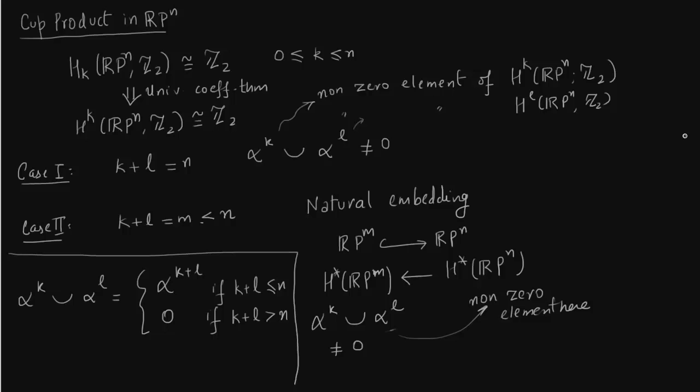So alpha k cup alpha L is non-zero if k plus L is equal to the entire dimension. In case 1, k plus L is N which equals RP^N, and k plus L equals M in case 2, and therefore we had to use a natural embedding. So because of this structure we have the following ring structure on RP^N.